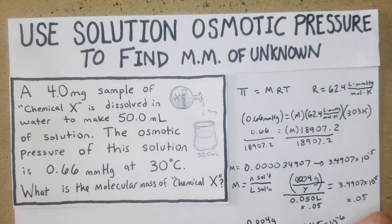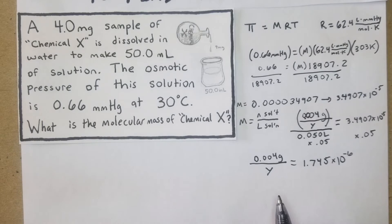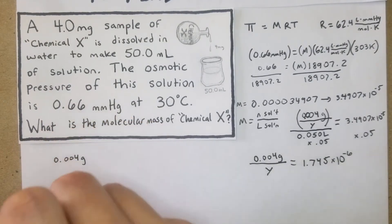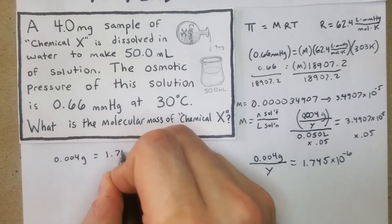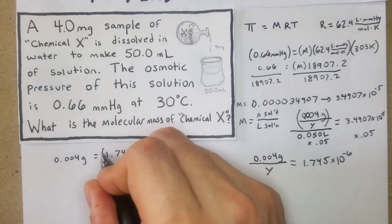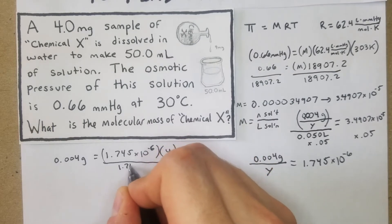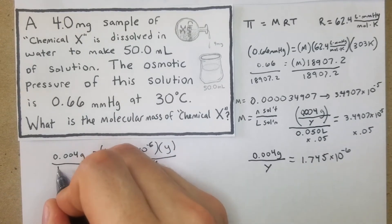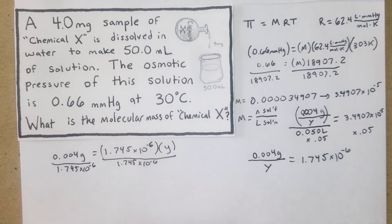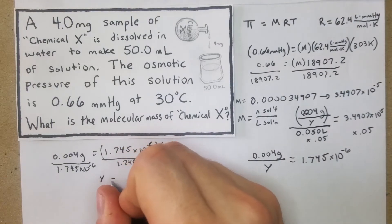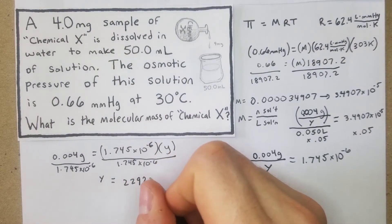We're getting some progress here. Now we just solve for y. You can move y over here and then multiply both sides. I'll write it over here: 0.004 grams equals 1.745 times 10 to the negative 6 times y. Then what we do is divide both sides by 1.745 times 10 to the negative 6. 0.004 divided by 1.745 times 10 to the negative 6.